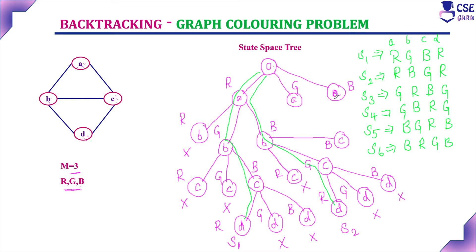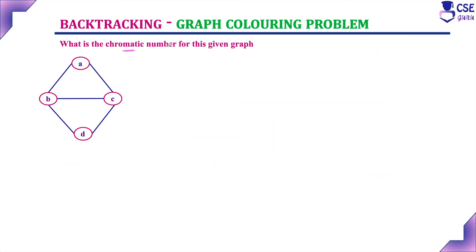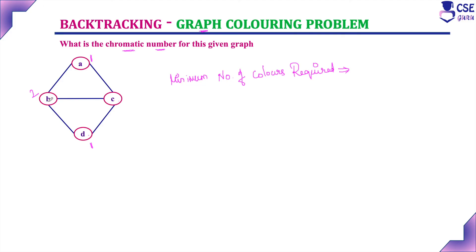For your practice, construct these two complete state space trees. What is the chromatic number for this given graph? The chromatic number is the minimum number of colors required to color the given graph while satisfying the graph coloring constraint — each vertex is assigned a color such that no two adjacent vertices are of the same color. A and D are not adjacent, so you can give them the same color; B gets a second color. For C, you cannot assign color 1 or color 2, so you need a third color. Therefore, the minimum number of colors required is 3, and the chromatic number for this given graph is 3.